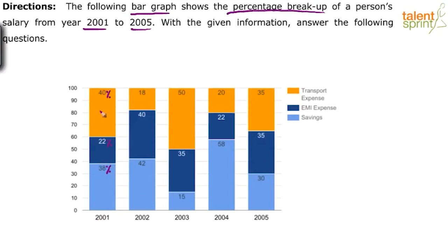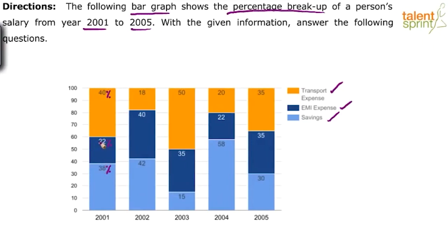Different colors are used here. Orange shows transport expense, dark blue shows EMI expense, and the lighter one shows savings. So we can say that in the year 2001, the person has spent 40% of his salary on transport expenses, 22% on EMI expense, and the remaining 38% on savings.